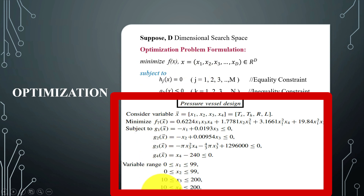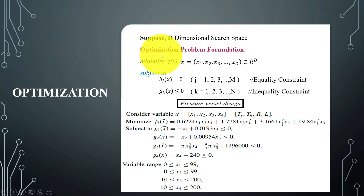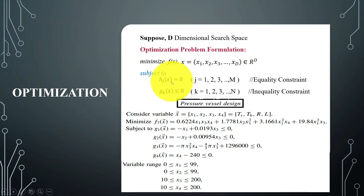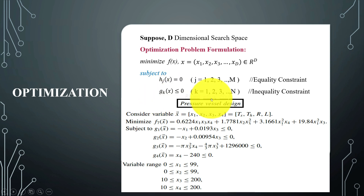Optimization problems are mathematical problems involving finding the optimal value of a function or a set of variables that satisfy certain constraints. The objective is to either minimize or maximize the objective function f(x), where x represents the set of variables, subject to h_j(x) as equality constraints and g_k(x) as inequality constraints.